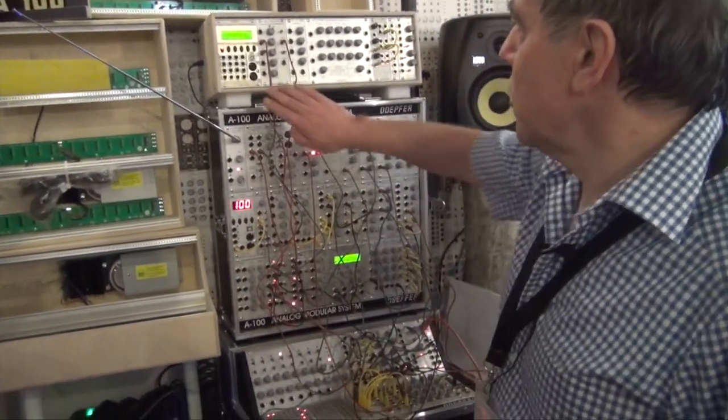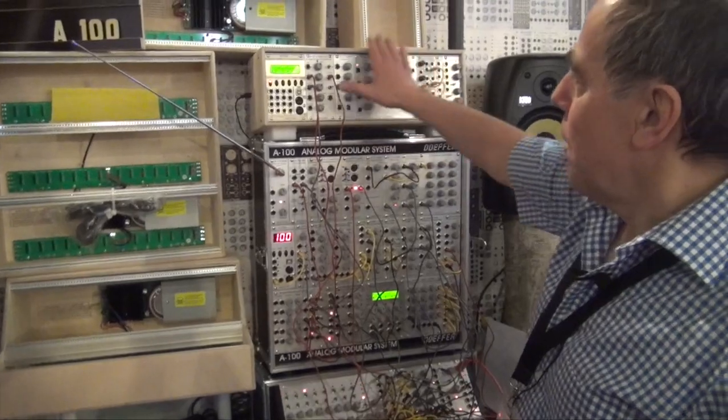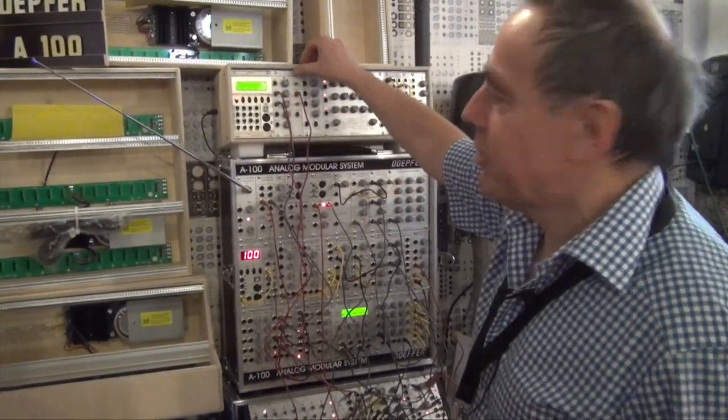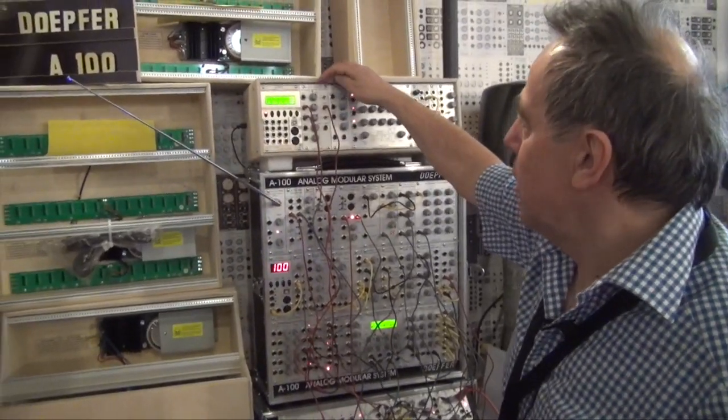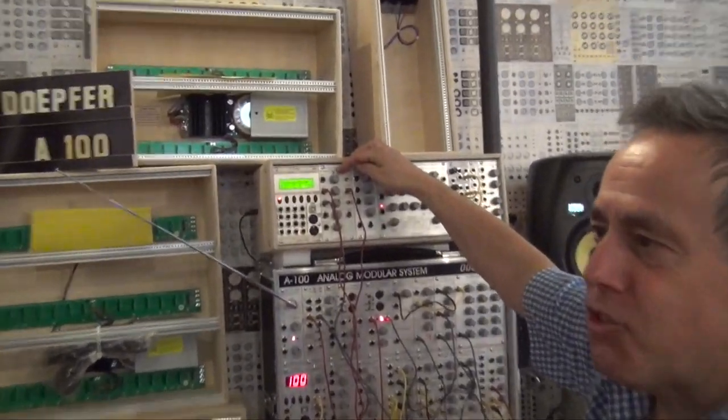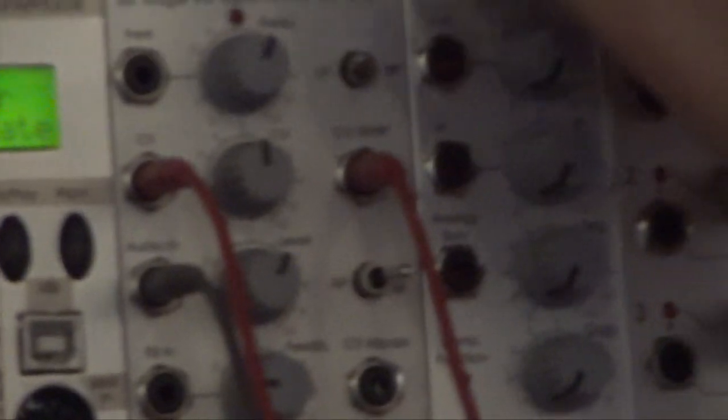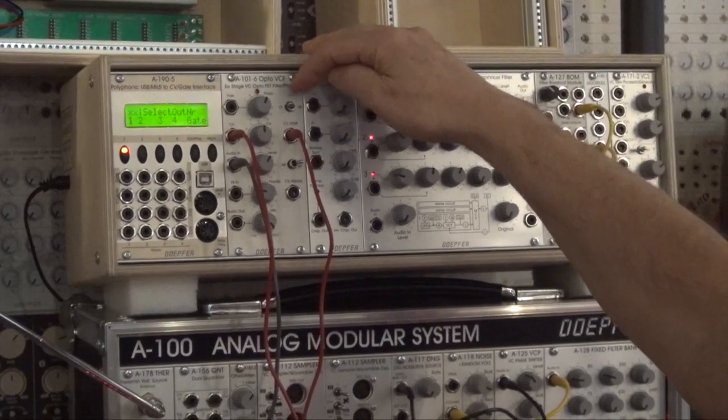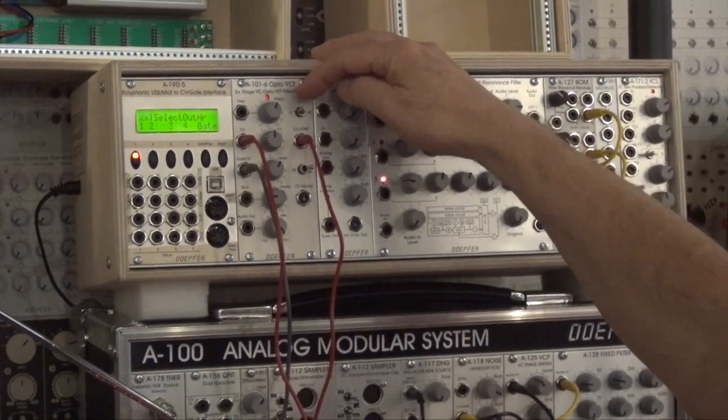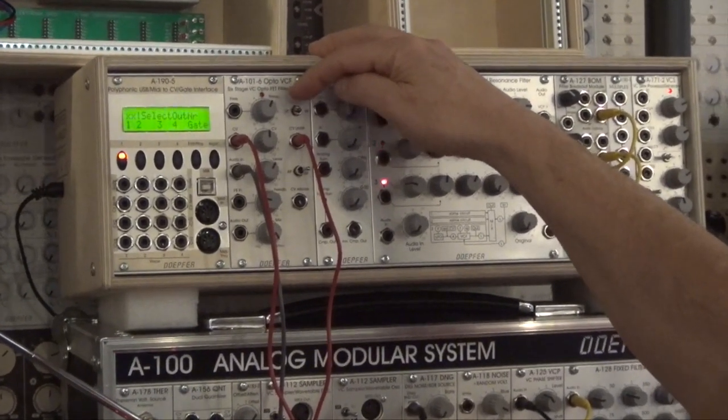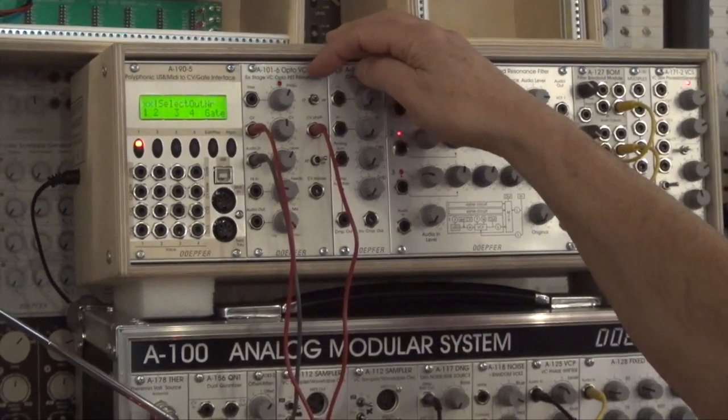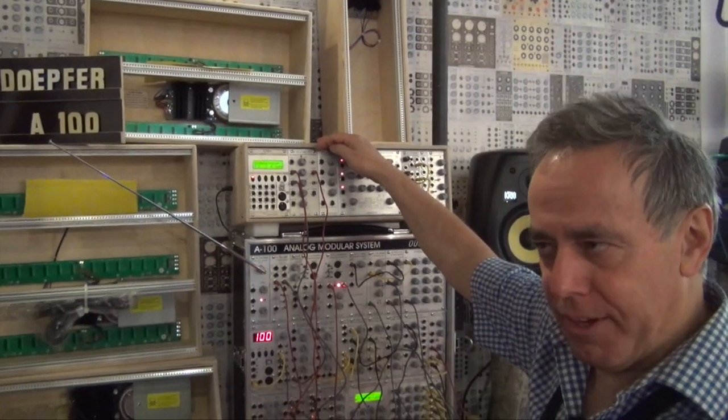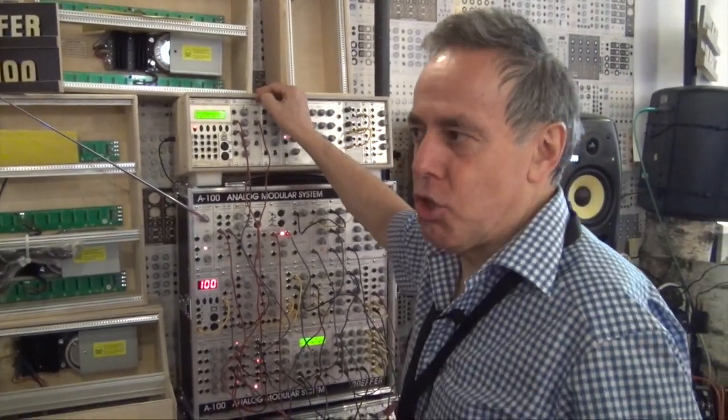We have another new module—a new filter. It's a brand new design that uses opto field effect transistors. It's similar to Vectrols, which are light-dependent resistors, but instead of a resistor, it's a field effect transistor that's optically controlled. It sounds a bit like a Vectrol filter but it's much faster.